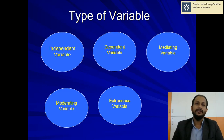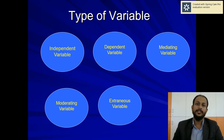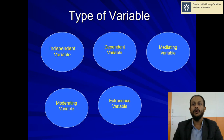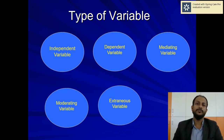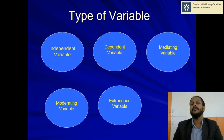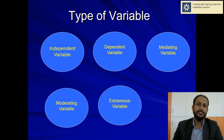Welcome to our channel, Talks on Management and Research. In today's session we are going to cover an important topic in research called types of variables. We are going to discuss five different types of variables which are predominantly used in research: independent variable, dependent variable, mediating variable, moderating variable, and extraneous variable. Let us discuss these variables one by one.